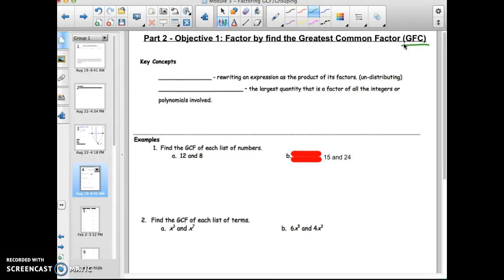So a couple notes before we get going with examples. The first is rewriting an expression as the product of its factors, or undistributing, or the opposite of multiplying binomials, is factoring.